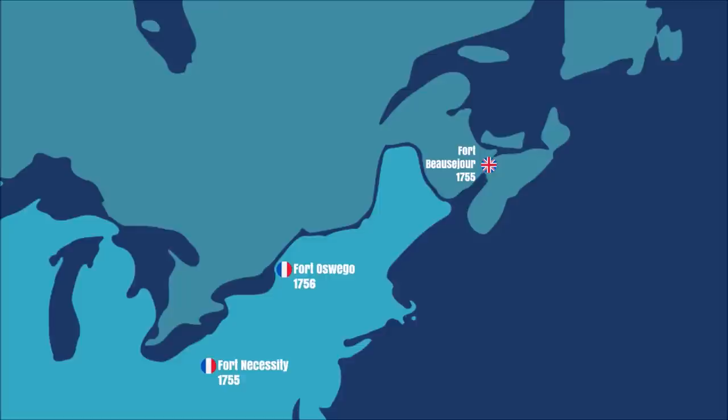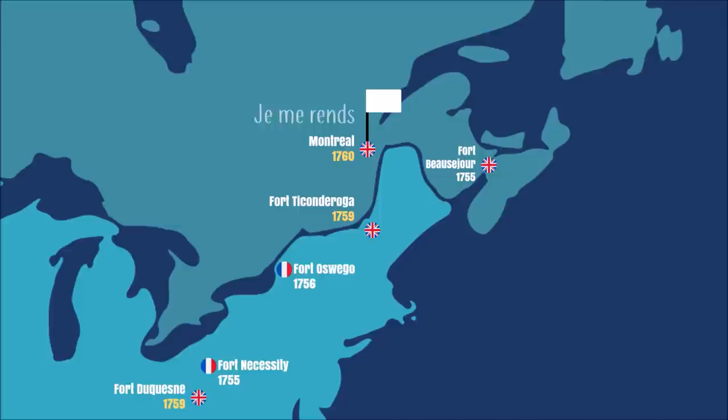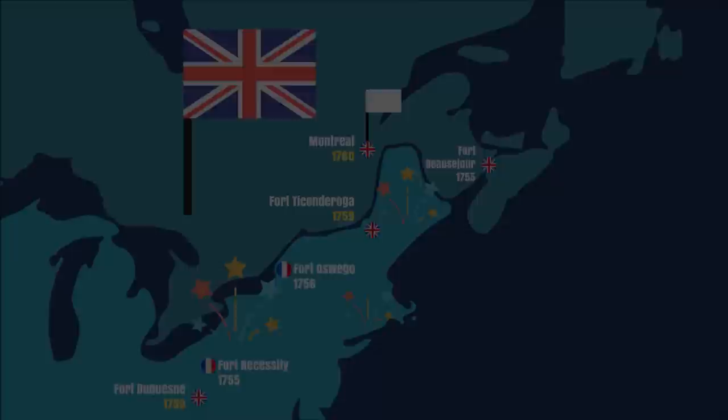After a series of battles with back-and-forth victories between both sides, the turning point came in 1759 when the British captured Fort Duquesne, followed by Ticonderoga, and finally Montreal. This forced the French forces to surrender. As a result, France gave Canada to England and removed their troops from the Ohio River Valley. And there was much rejoicing — yay!